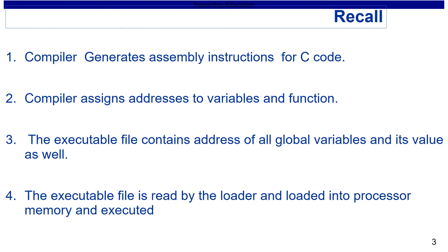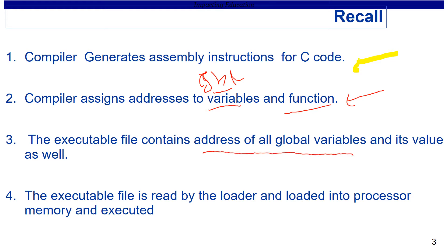Before going further, let's recollect what we learned in the last lecture. We saw that the compiler generates assembly instructions for C code, and the compiler assigns addresses to global variables and functions in the executable file. The final executable contains addresses and initial values of all global variables. The executable file is then read by the loader, which loads the program and data into processor memory before executing it.